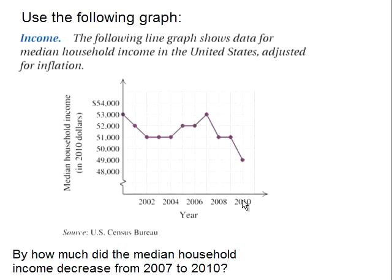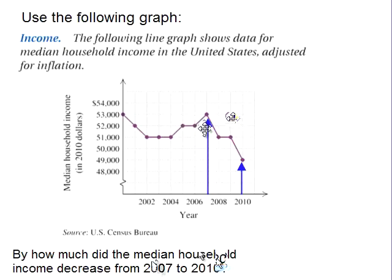Looking carefully at our graph, we see that the horizontal axis represents the year. Since we want to know something about 2007 and 2010, we'll start by marking those years. So in 2007, I have an arrow here, and 2010.